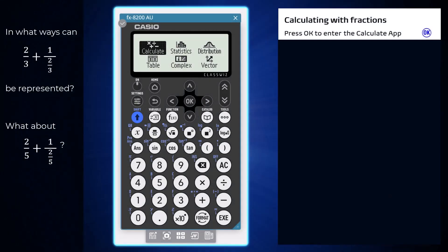A range of calculations with fractions and their conversions into other formats can be performed using the Calculate app of Casio FX 8200 AU, opened from the home screen by pressing OK or Execute.